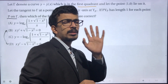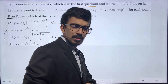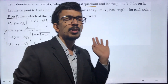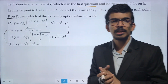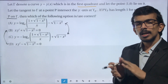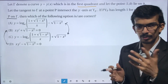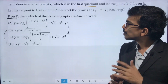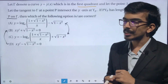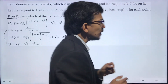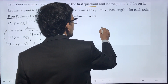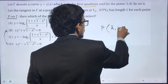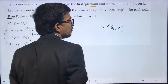It is a straightforward problem — a normal question from differential equations — but there is a small trick involved. Let's get started. First of all, choose point P as (h, k), since we need to find the locus of all P.